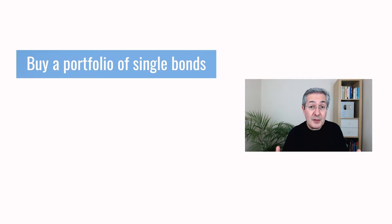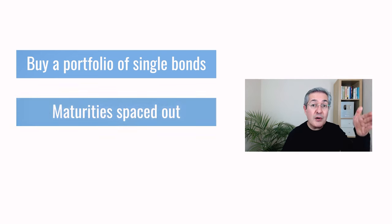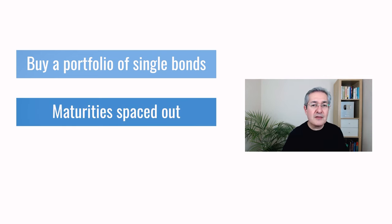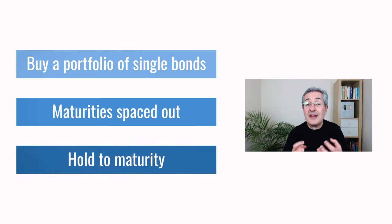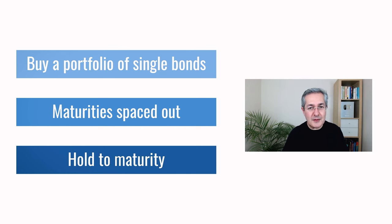So a bond ladder is built out of government bonds — but what is the bond ladder itself? It's simply a portfolio of government bonds. What you do is space out the maturity dates to occur at regular intervals, for example every year. And what people usually do is never sell their bonds — they hold them until they mature. That has very important consequences as we'll see in a moment.